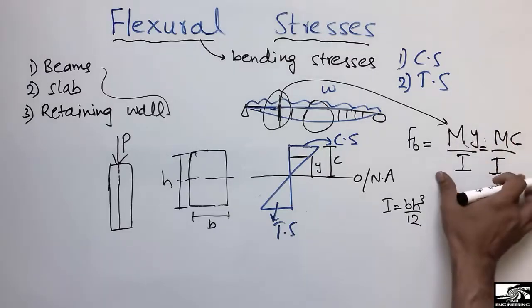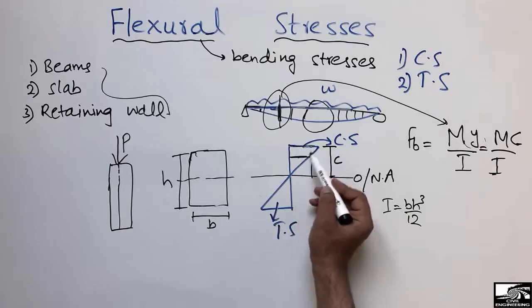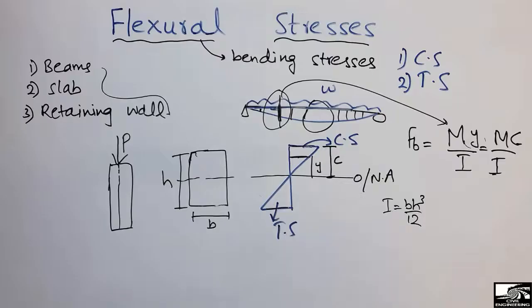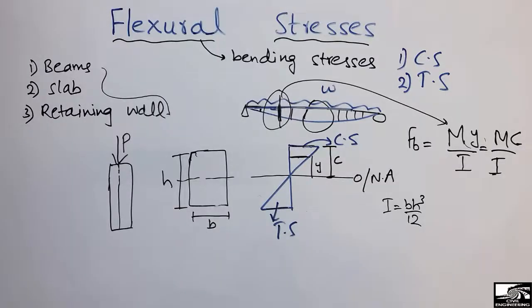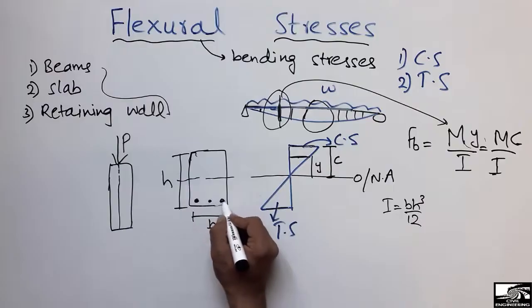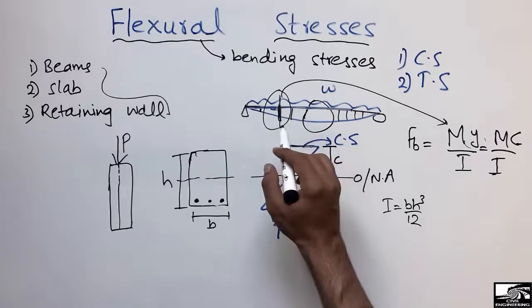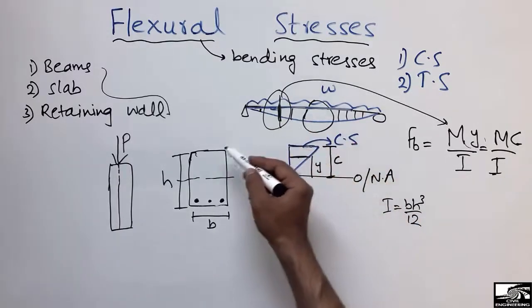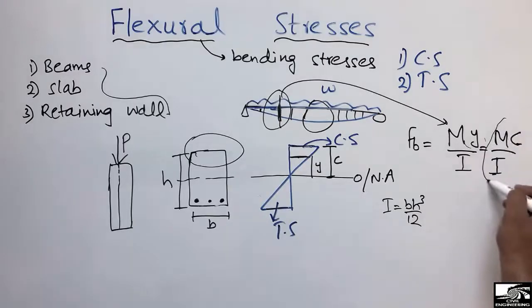By putting all values into this equation, you can find the flexure stresses of your beam, which will be maximum at the top (compressive) and the bottom (tensile). We provide reinforcement at the bottom of the beam for tension because concrete is weak in tension. For compressive stresses, we do not provide reinforcement because concrete is strong in compression. This was all about flexure stresses, which commonly occur in beams, slabs, and retaining walls.